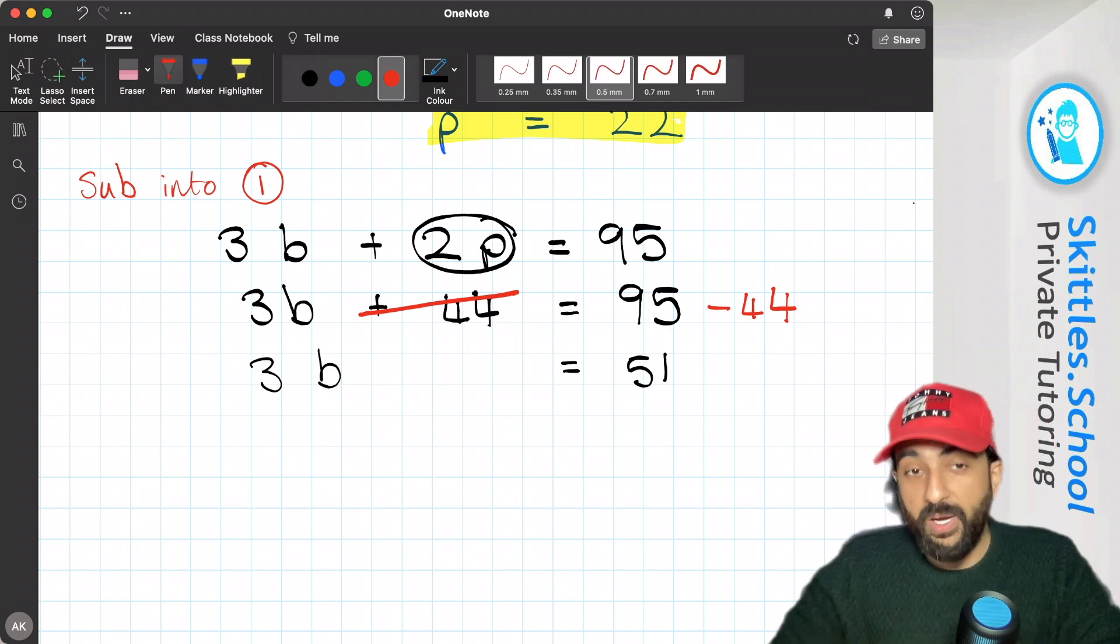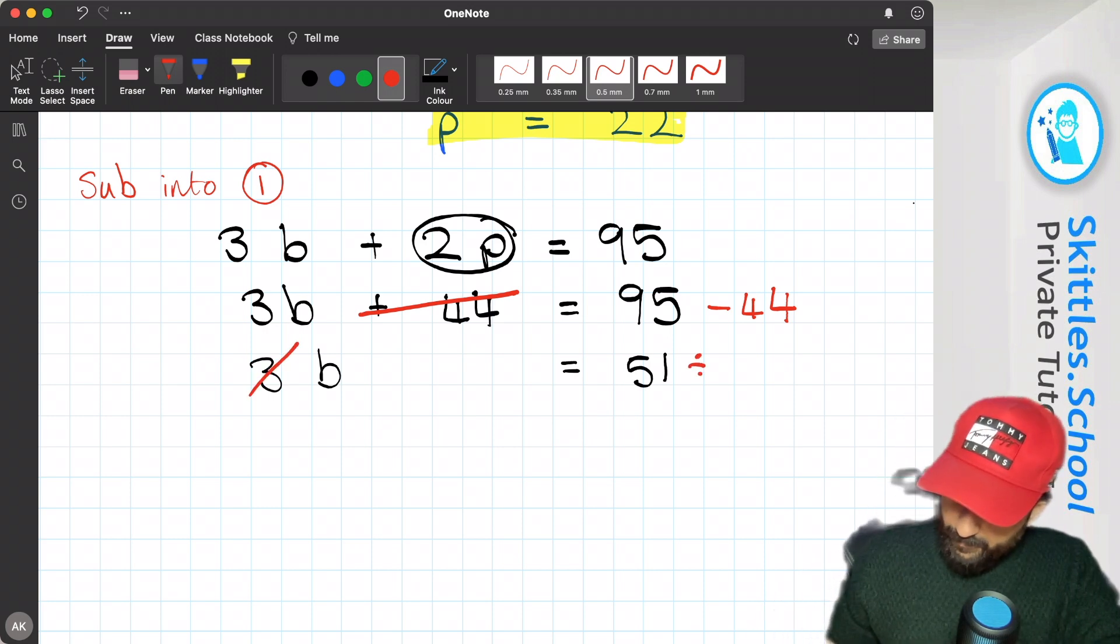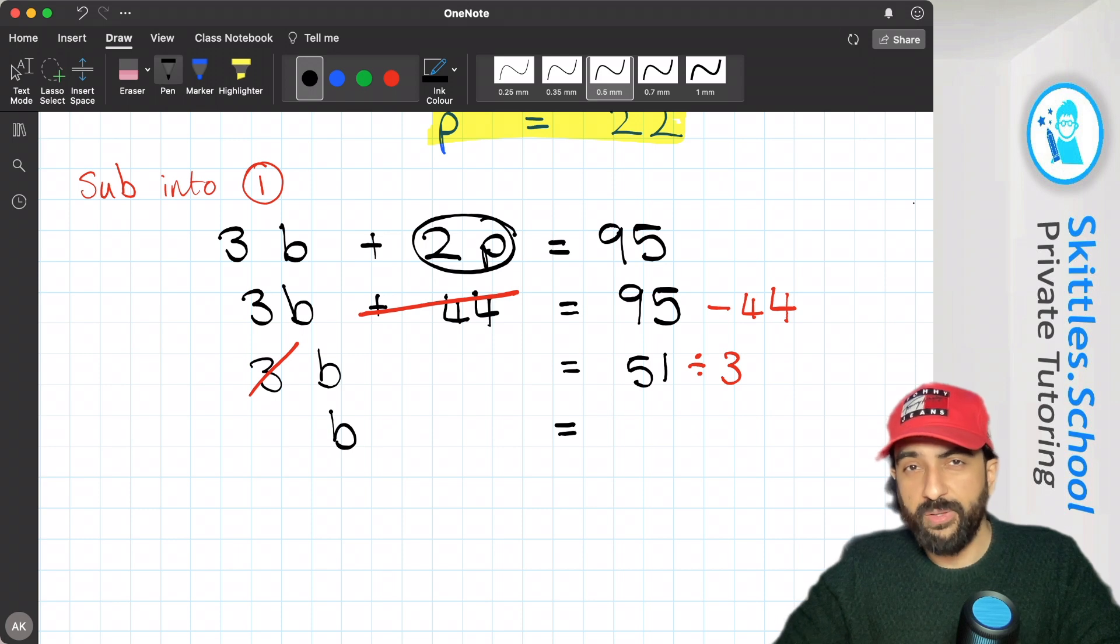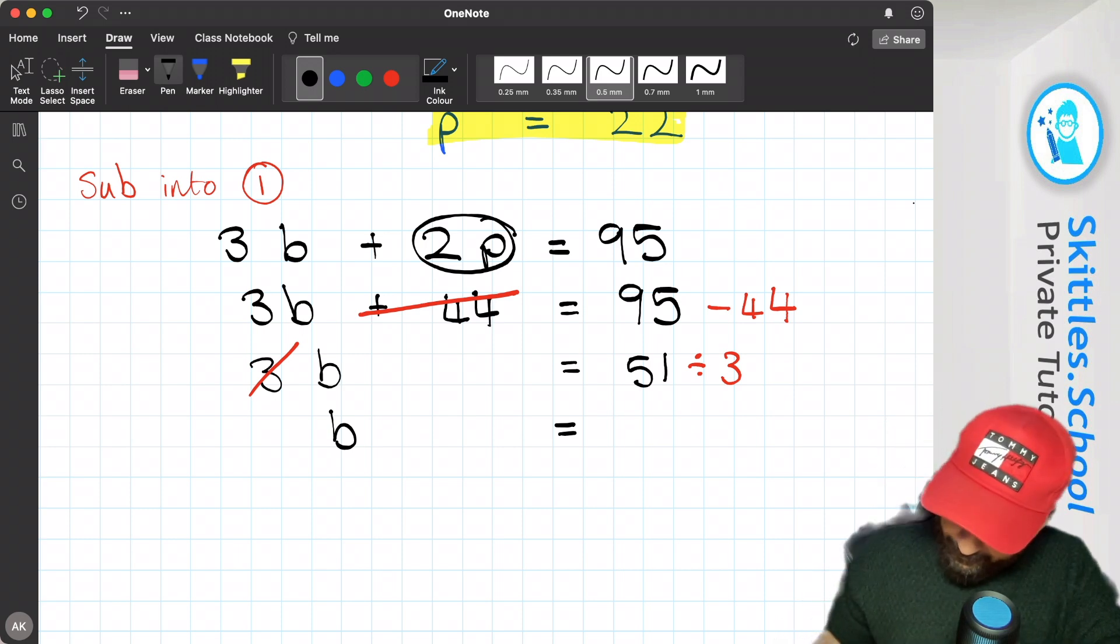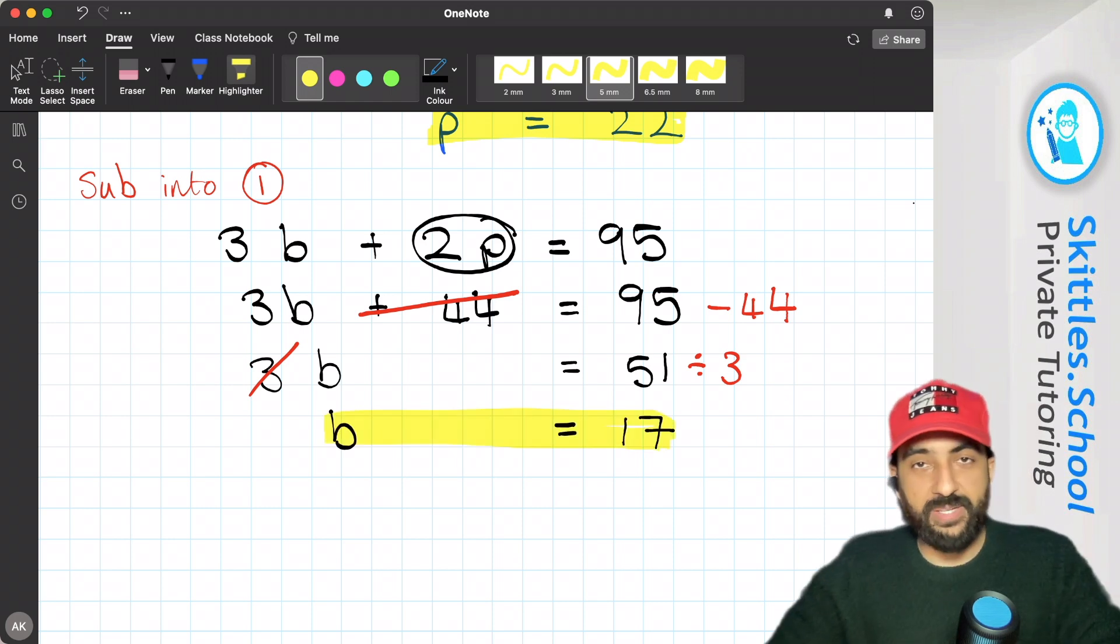Then if we divide both sides by 3, that'll get rid of this. Then we'll be left with b equals 51 divided by 3, which is 17. Now we've got our value for bananas. A banana is 17.